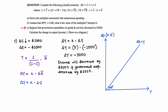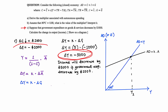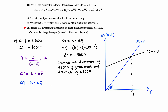The initial equilibrium point is where the first aggregate demand line intersects the 45-degree line, giving us the first level of income Y1. Given that income decreases by $5,000 when government expenditure decreases by $1,000, the equilibrium point decreases. We represent this by drawing a new AD line below the original, giving a new equilibrium and a second level of income Y2. The change in Y equals Y2 minus Y1, which is negative, since Y2 is less than Y1.